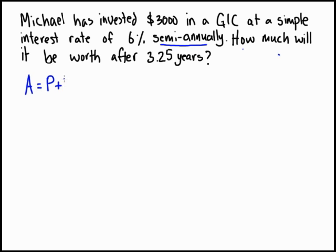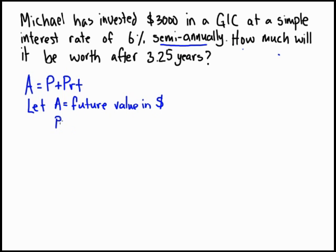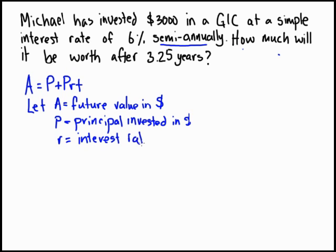The formula is A equals P plus PRT. Let's define our terms: let A equal the future value in dollars, P is the principal amount invested in dollars, R is equal to the interest rate, and T is equal to time in years.